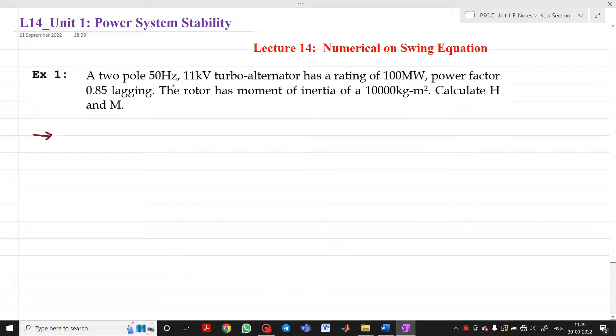A 2 pole 50 Hertz 11 kV turbo alternator has a rating of 100 MW. After reading each sentence I will write the given data. First, the number of poles P equals 2.